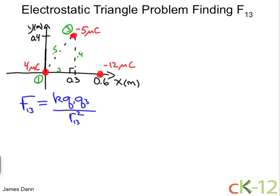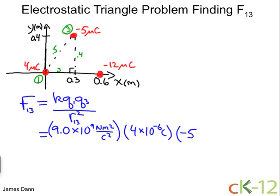Let's plug the numbers in. 9.0 times 10 to the 9th newton meters squared over coulombs squared, multiplied by charge 1, 4 microcoulombs. A micro is a millionth, so it's 4 times 10 to the minus 6th coulombs. Similarly for the other guy, it's minus 5 times 10 to the minus 6th coulombs. And that's all divided by the distance squared, which is 0.5 meters squared.